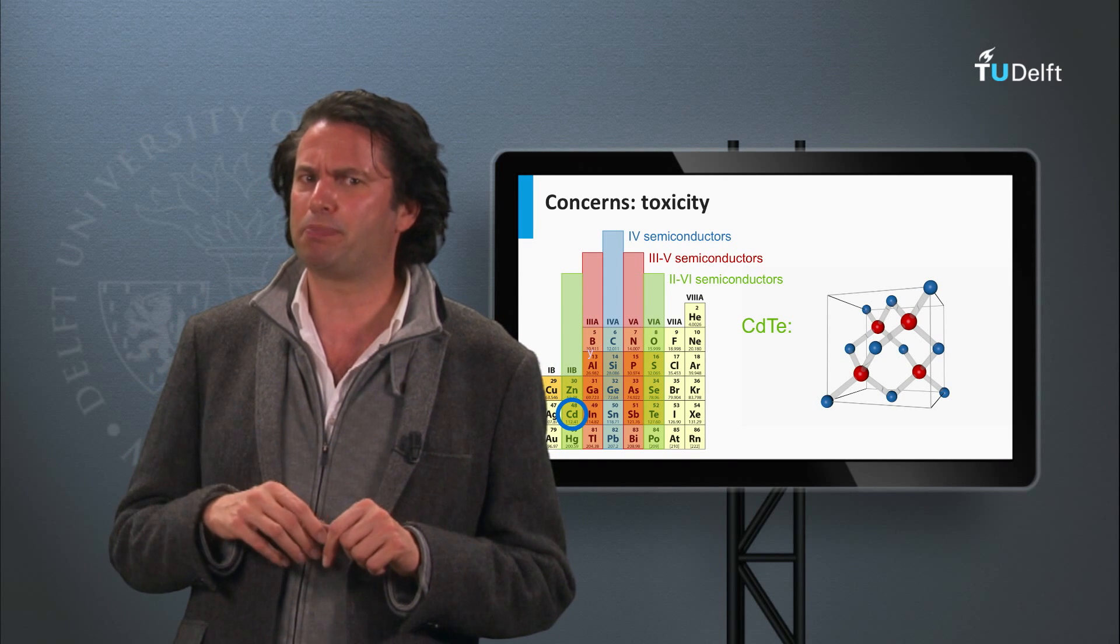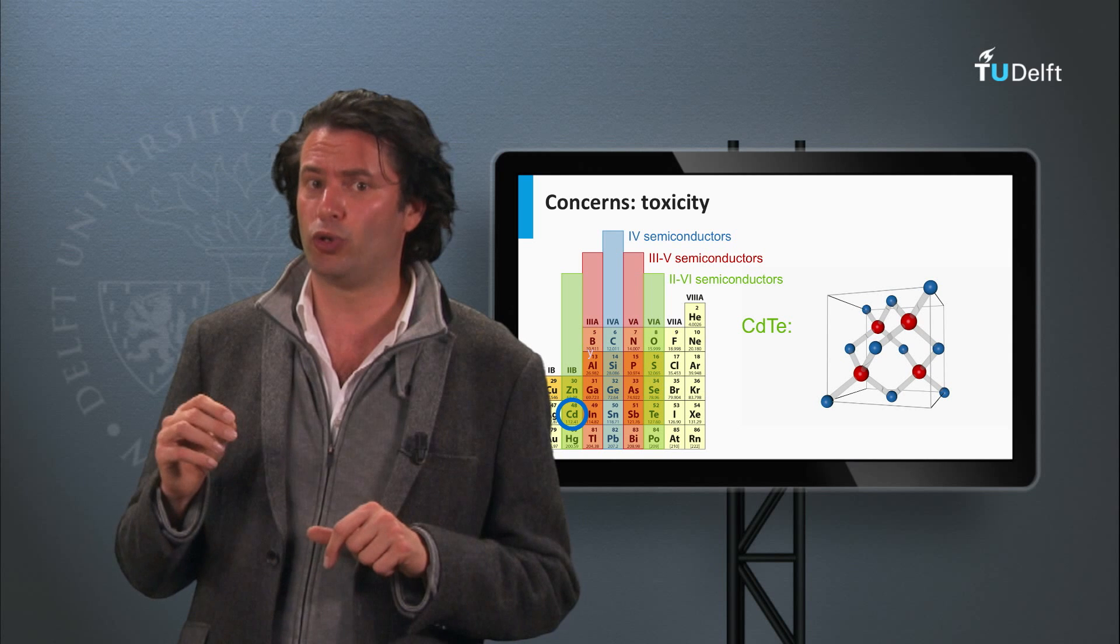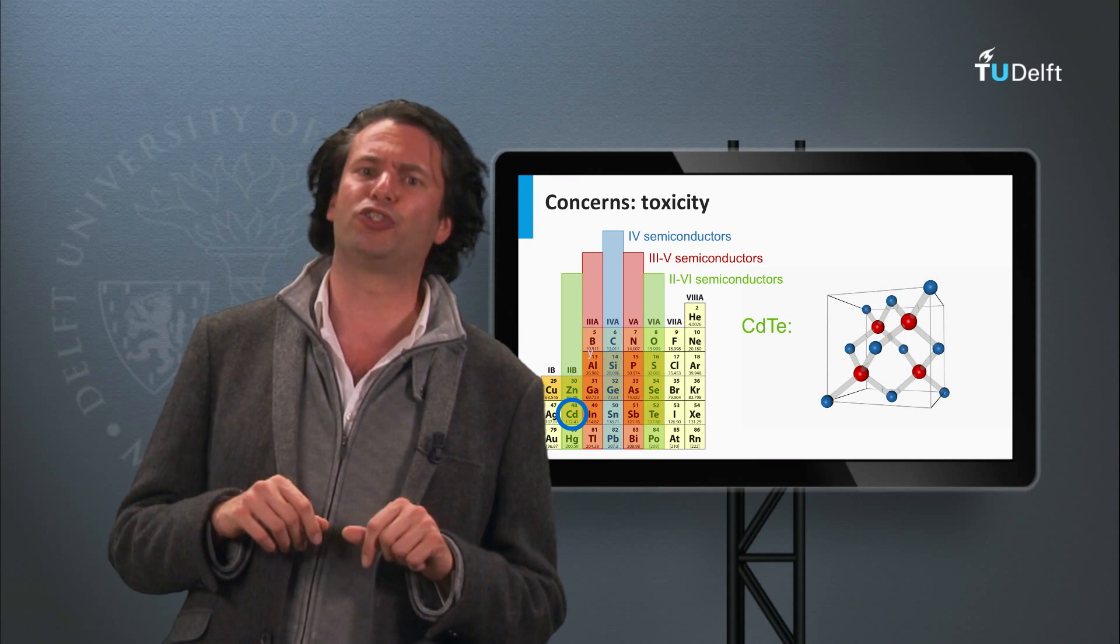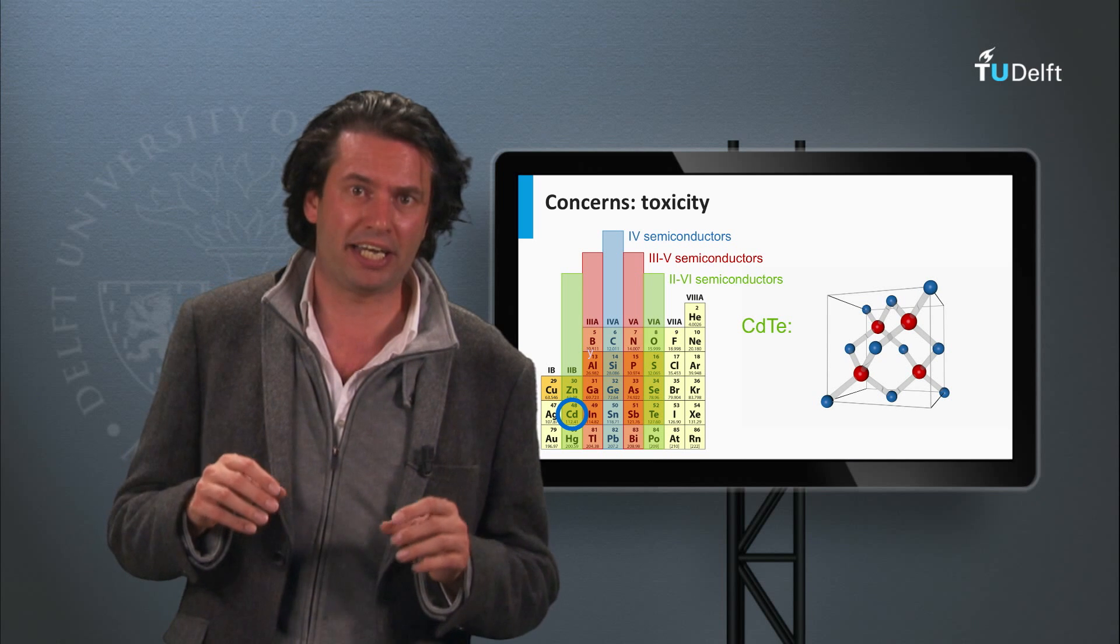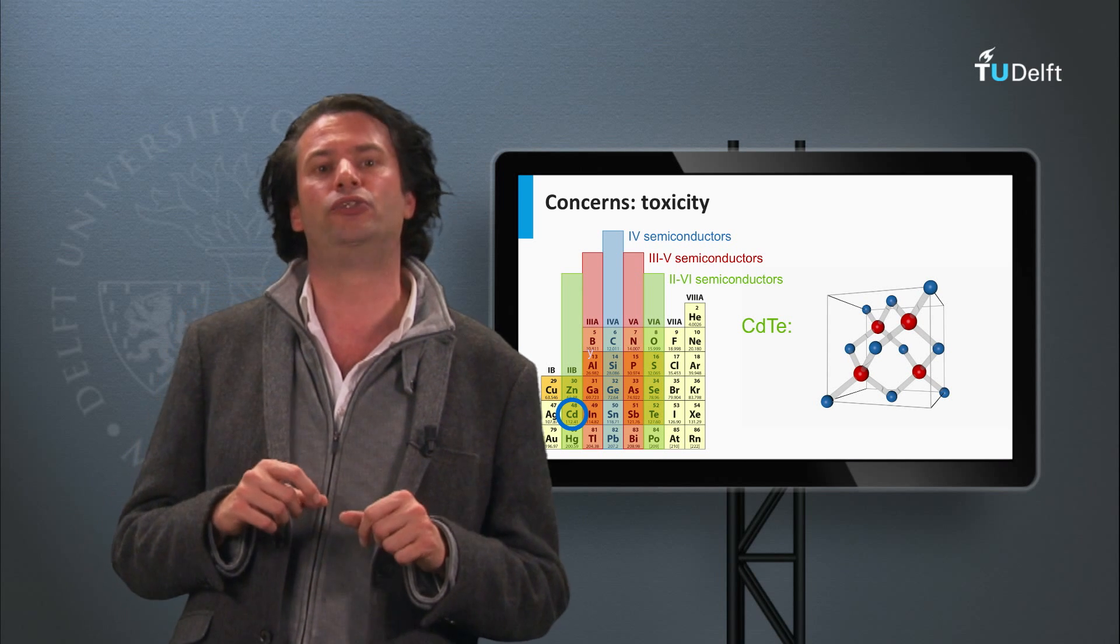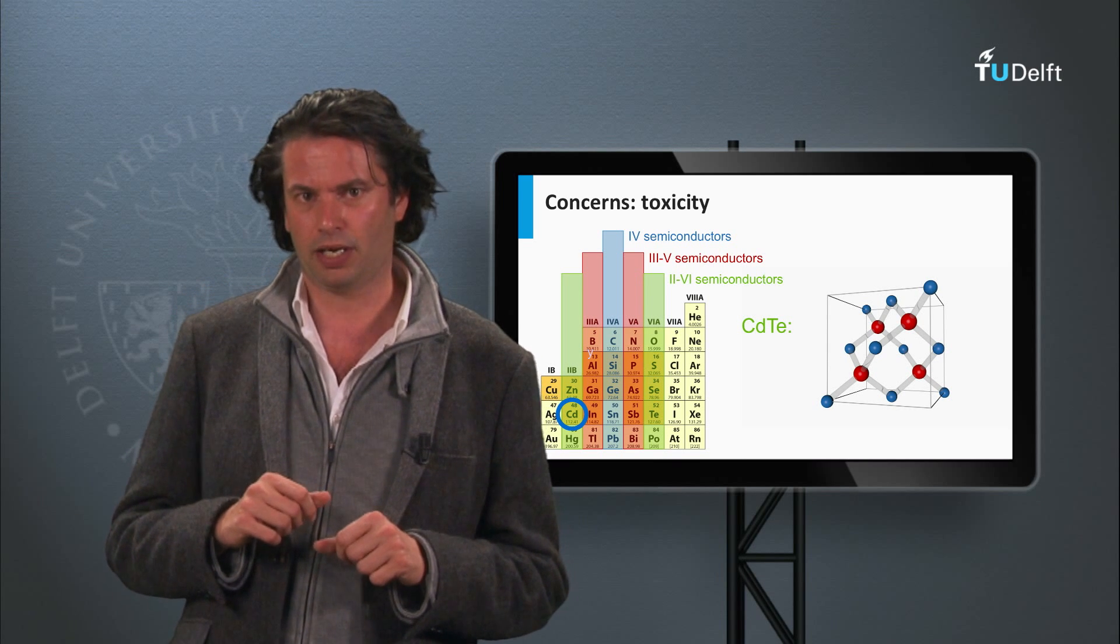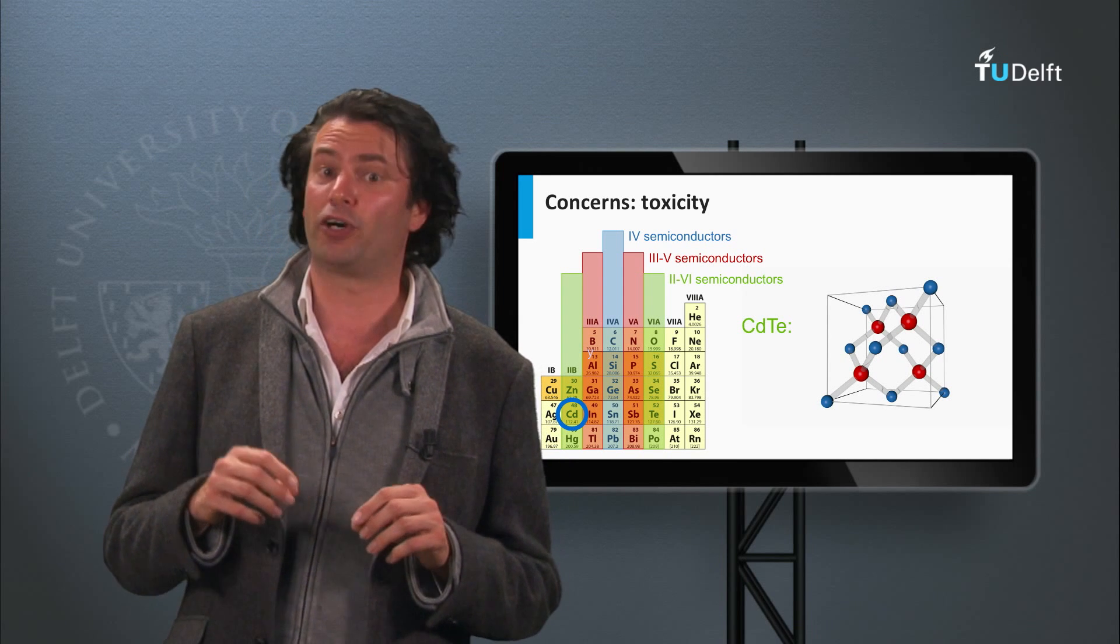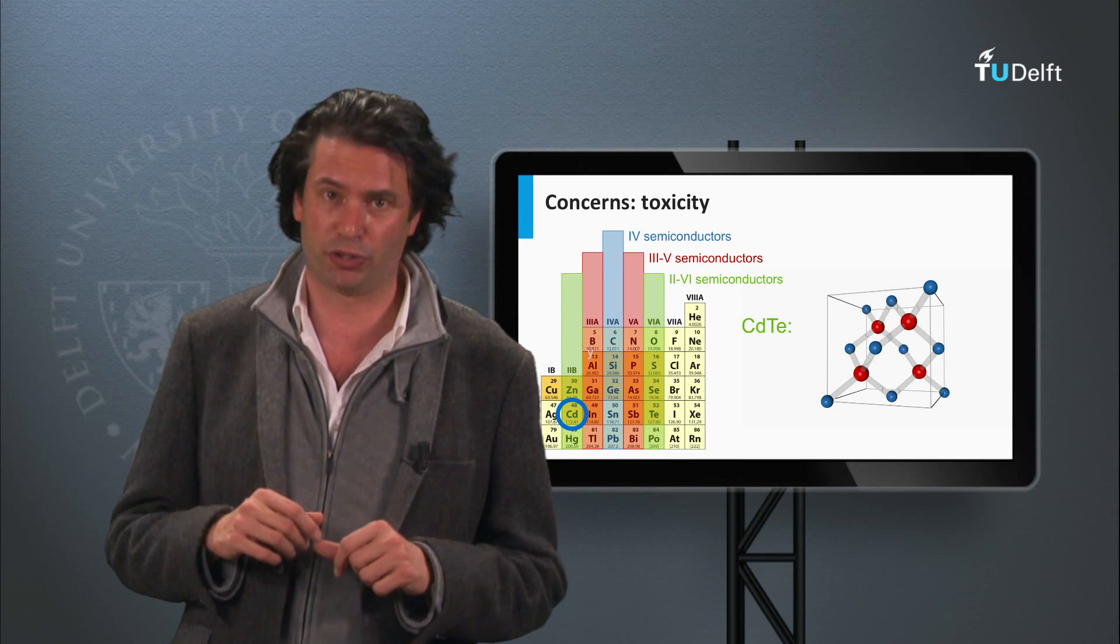A 2 gigawatt per year production capacity as installed by First Solar at the moment would take up around 2% of the total cadmium consumption by the industry and would not yet be a dominant contributor. Nevertheless, recycling schemes have been set up for installed cadmium telluride solar modules.